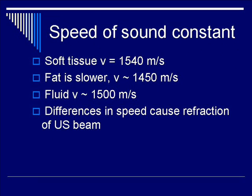The next assumption is that the speed of sound is constant. That is very far from the truth. In soft tissue, the velocity of sound is 1540 meters per second. However, in fat it is slightly slower at 1450 meters per second, and in fluid — which appears anechoic in ultrasound — the velocity is about 1500 meters per second. These differences in speed across different media will cause refraction of the ultrasound beam, which, by virtue of the bending of the beam, causes images to be located in places you did not expect.